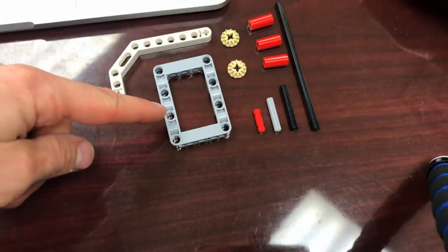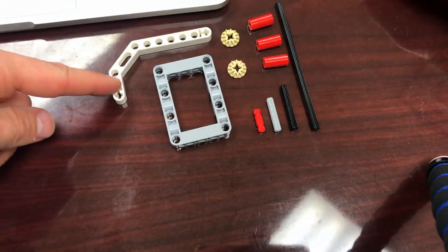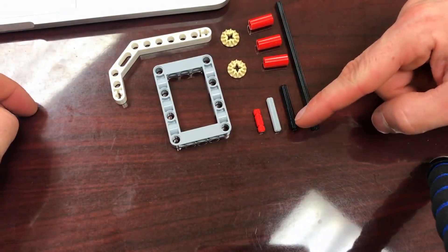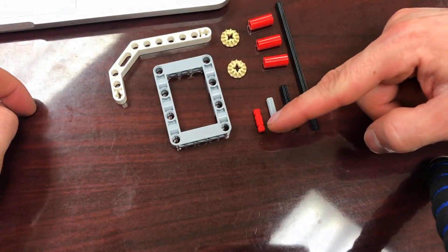Alright, these are the parts. We need one picture frame, we need one J beam, we need a number 10 axle, a number 4 axle, a number 3 axle, and a number 2 axle.